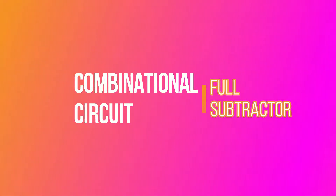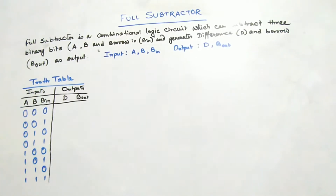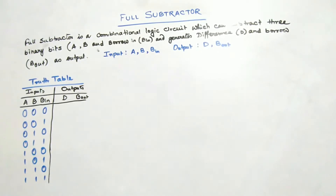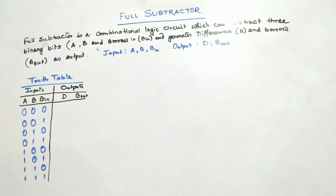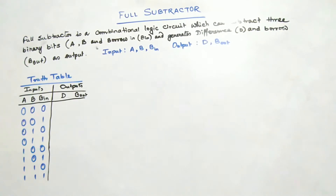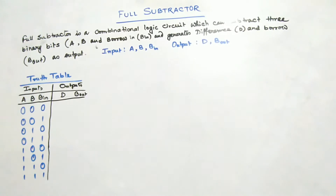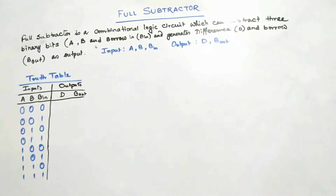A Full Subtractor is a combinational logic circuit that performs the subtraction of three binary bits and produces two outputs. It is more advantageous compared to a half-subtractor, which can only perform the subtraction of two binary bits. The Full Subtractor can subtract three binary bits — A, B, and a borrow bit — and produces a difference and borrow out (B out) as outputs.